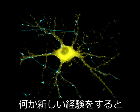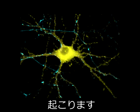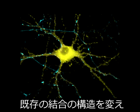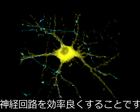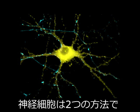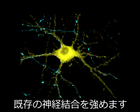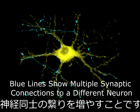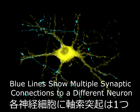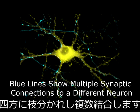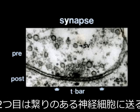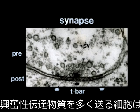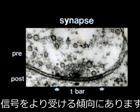When a person experiences something new, two different types of synaptic plasticity can occur. In the first type, the structure of already existing connections can be altered, making the pathways more efficient. Neurons can strengthen their existing connections in two ways: by increasing the number of synaptic contacts on each axon, or when synapses change the amount or type of neurotransmitter they send to a neighboring cell. A neuron that sends more excitatory neurotransmitters is more likely to make the second neuron fire back in response.